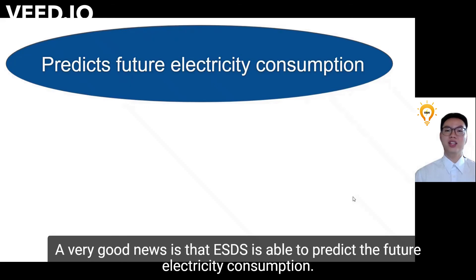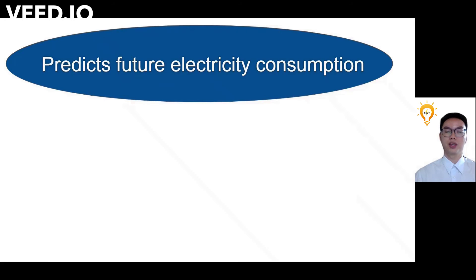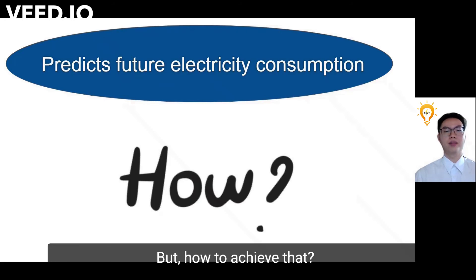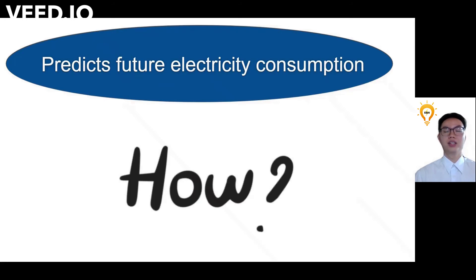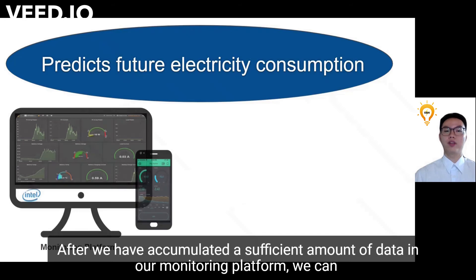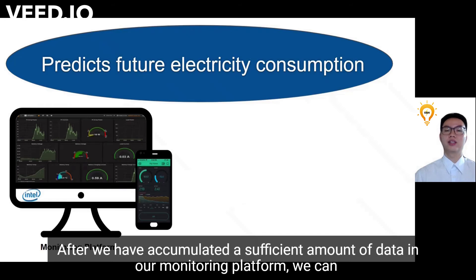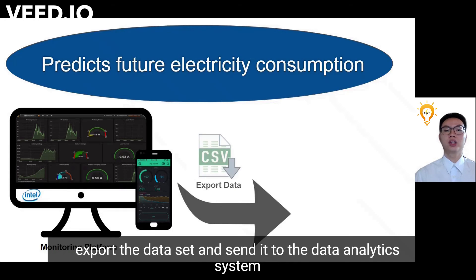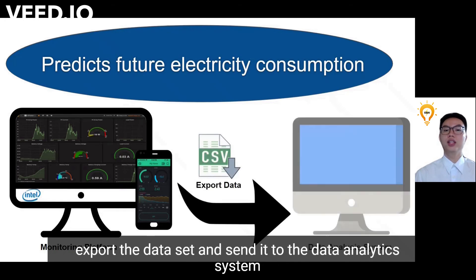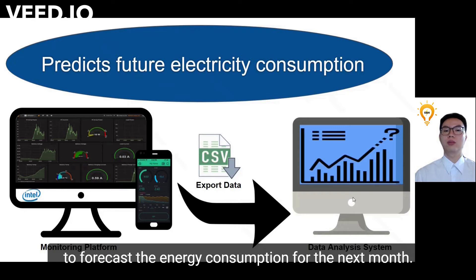A very good news is that ESDS is able to predict the future electricity consumption. But how to achieve that? Now I will explain. After we have accumulated a sufficient amount of data in our monitoring platform, we can export the dataset and send it to the data analysis system to forecast the energy consumption for the next month.